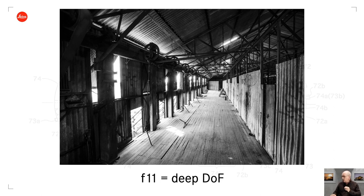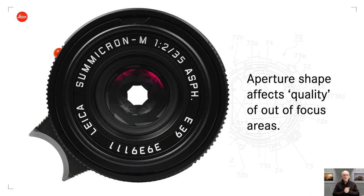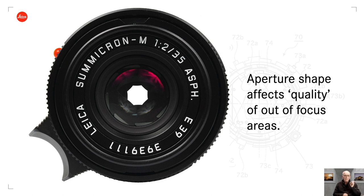Some subjects lend themselves to lots of depth of field, others to minimal depth of field. Portraits, details, small things separated from the background benefit from limited depth of field. Larger subjects — views, interiors, architecture — often benefit from lots of depth of field. I'm not talking specific numbers; it's just a lot of depth of field or not much. It's also somewhat lens-dependent, which I'll come back to.